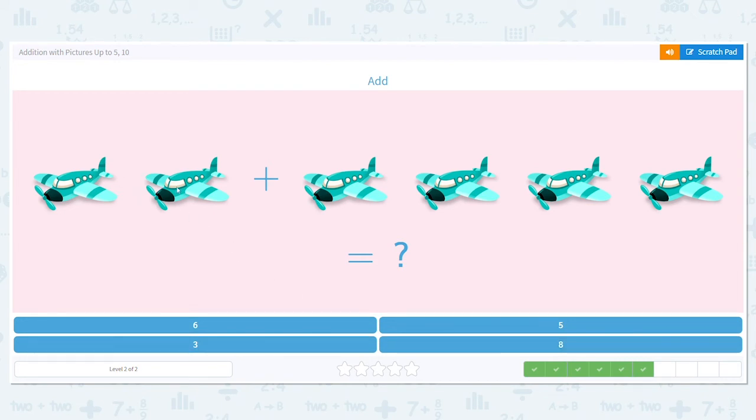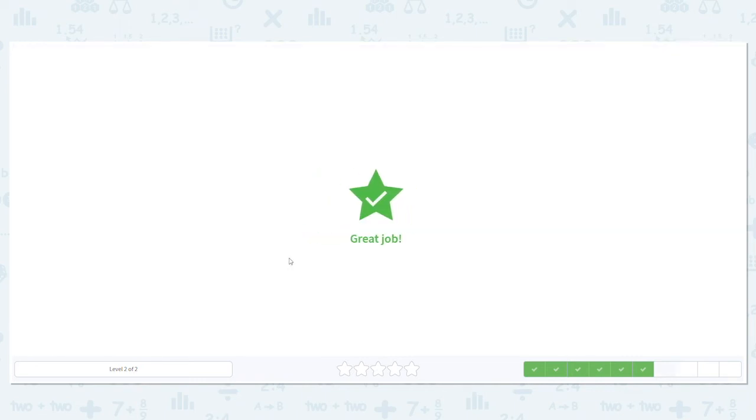So we have 2, 3, 4, 5, 6. We have 6 planes. 2 plus 4 equals 6.